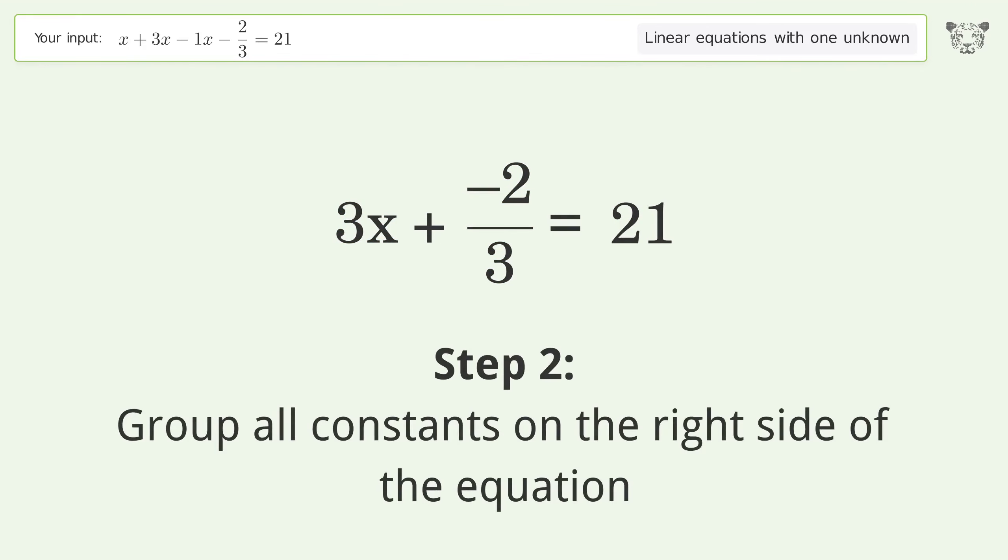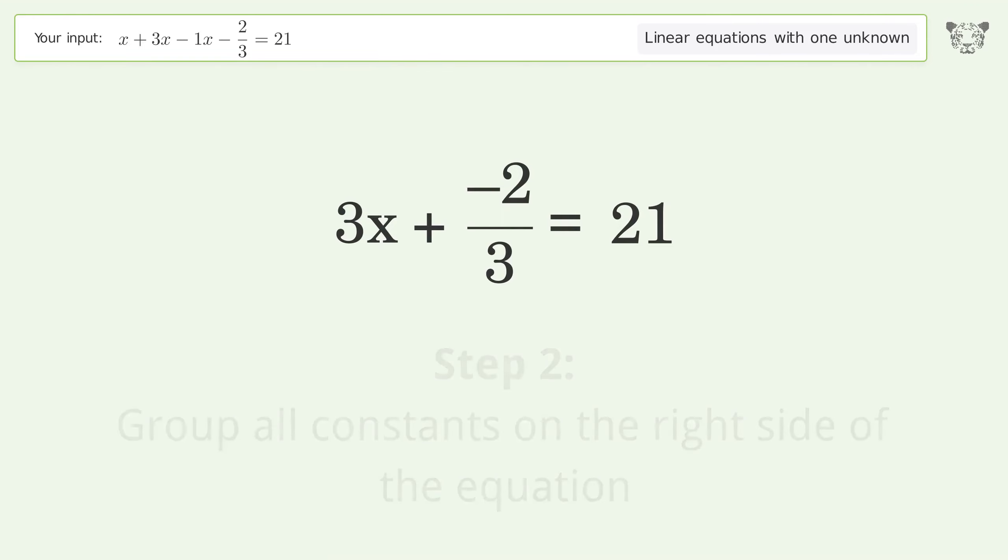Group all constants on the right side of the equation. Add 2 over 3 to both sides.